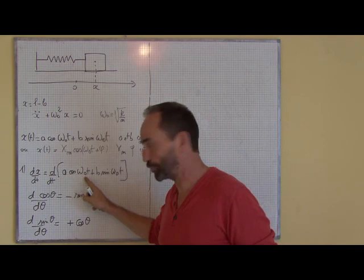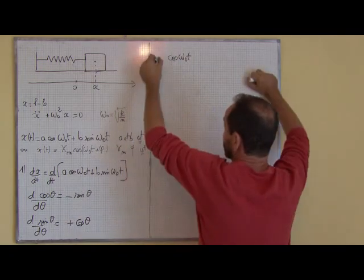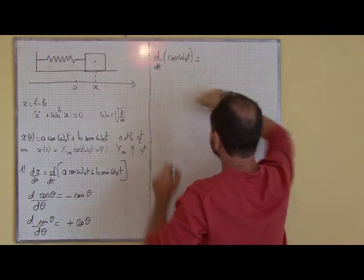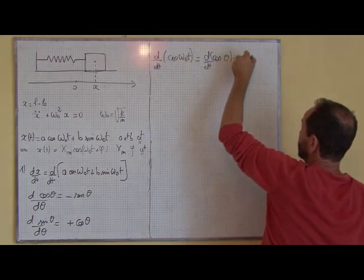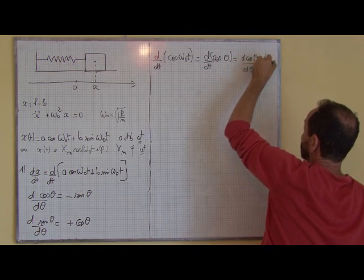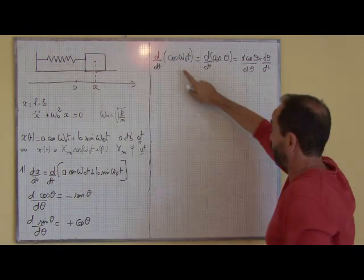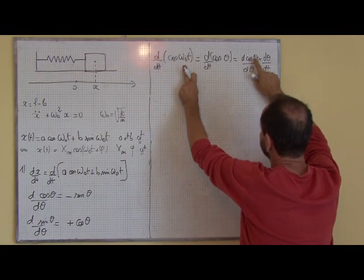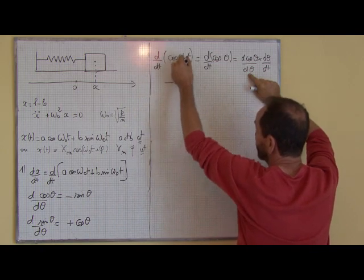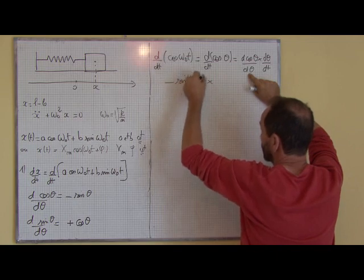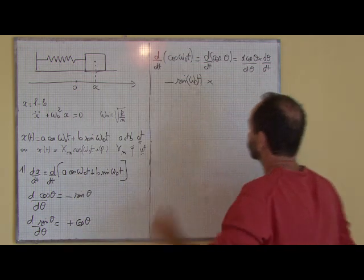On voit que θ varie au cours du temps. Autrement dit, si on veut dériver cos(ω₀t) par rapport au temps, c'est comme si on dérivait par rapport au temps cos(θ), θ valant ω₀t. Et ceci, c'est la dérivée de cos(θ) par rapport à θ fois dθ/dt, la dérivée de θ par rapport au temps. Attention à cette feinte, il faut la connaître. Donc si on fait la dérivée par rapport au temps de cos(ω₀t), ça nous fait moins sin(θ) qui vaut ω₀t, fois ω₀.